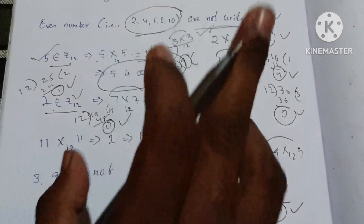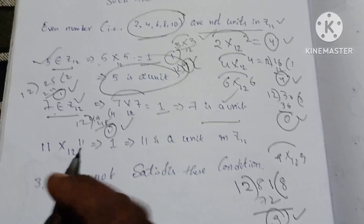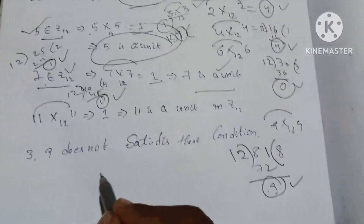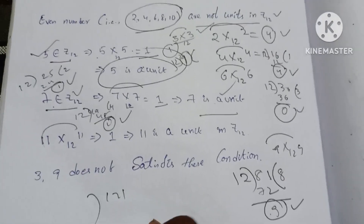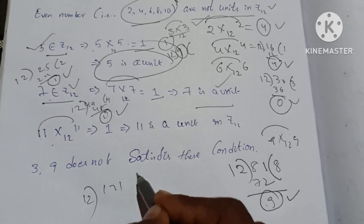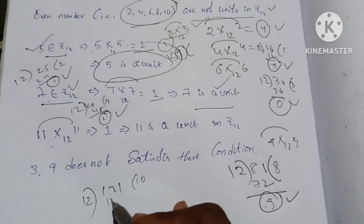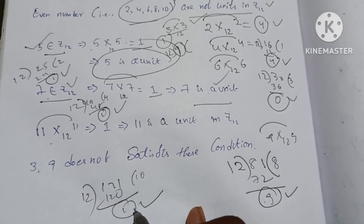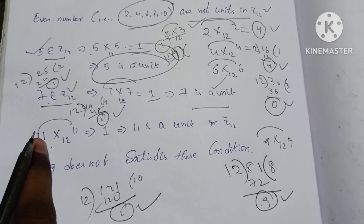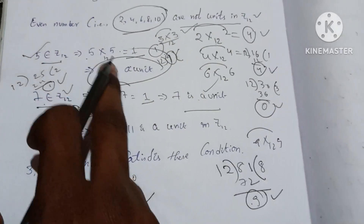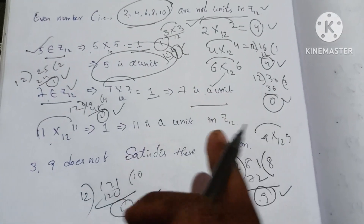Next, check 11. 11 into 11 is 121. Multiplication modulo 12: 12×10 = 120, remaining is 1. So 11 is a unit.